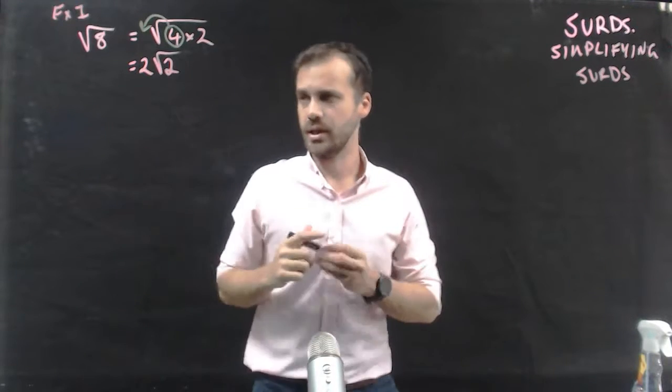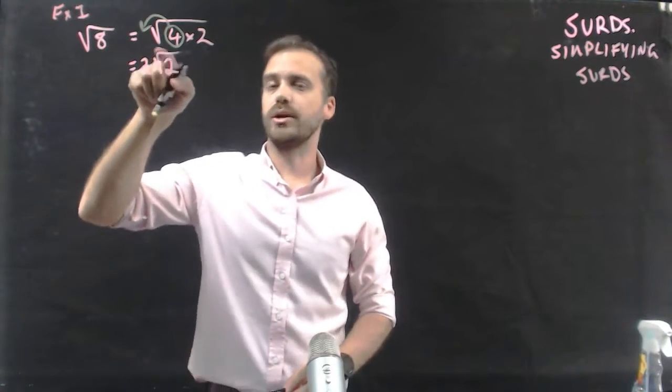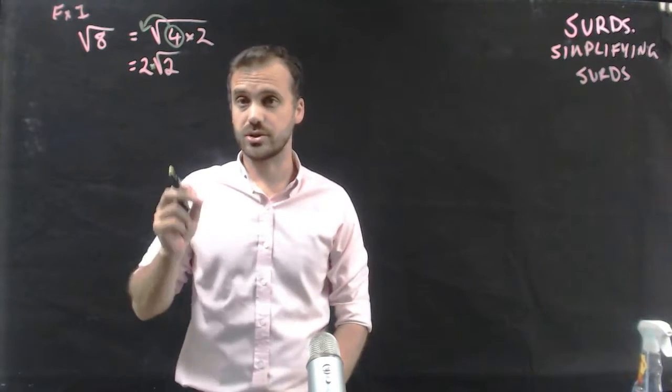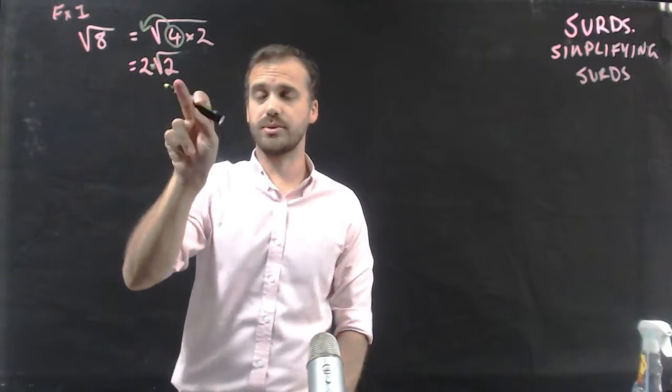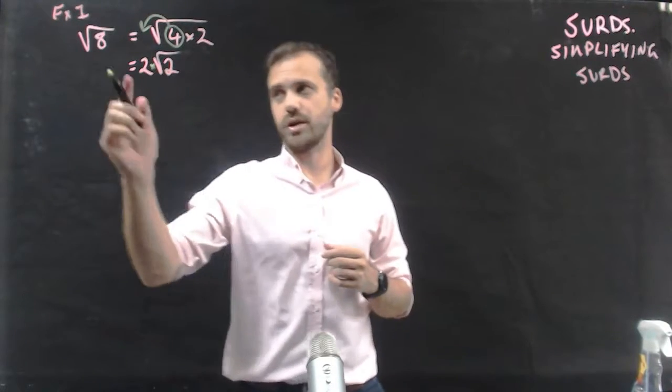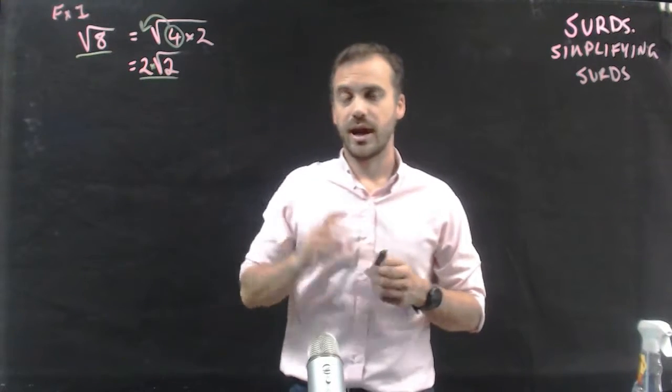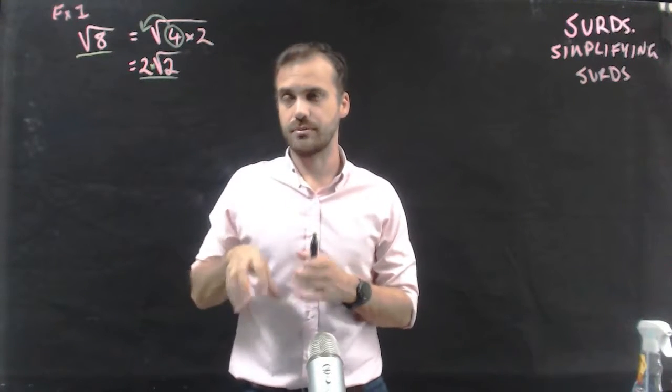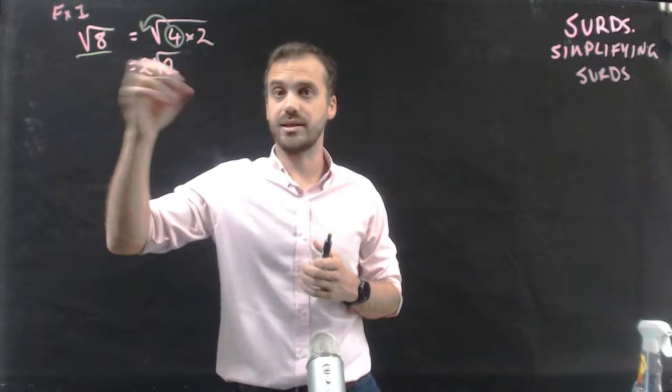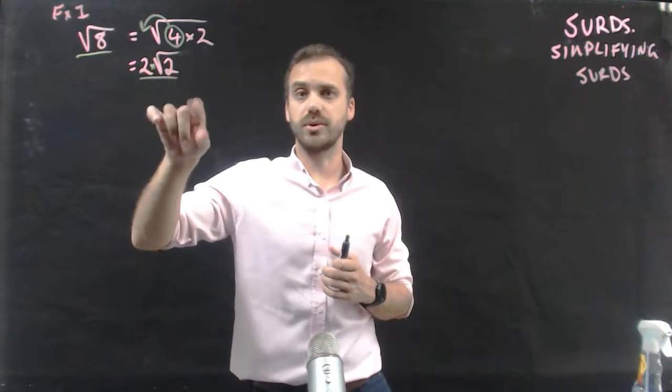Now, what that actually says is 2 times square root 2. By moving it out of there, that's what we end up with. 2 times the square root of 2. Now, you can type this into your calculator, and you can type this into your calculator, and it will give you the same answer both times. The square root of 8 is equal to 2 square root 2.